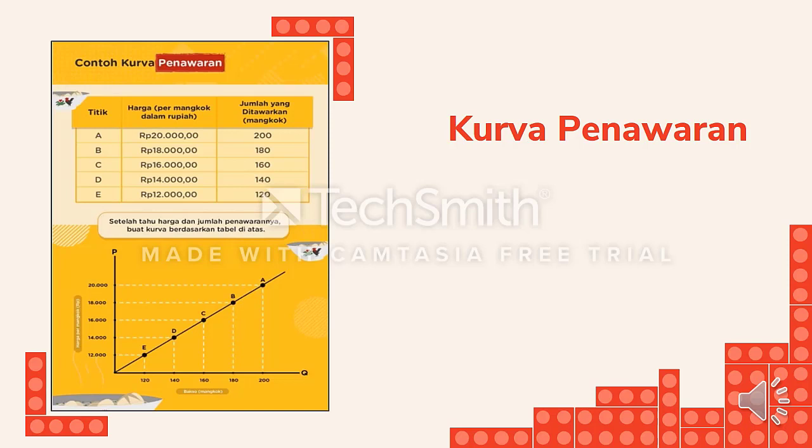Bagaimana hubungan antara harga dengan jumlah barang yang ditawarkan? Hubungan antara harga dengan penawaran dapat dilihat dari bunyi hukum penawaran, yaitu: jika harga barang yang ditawarkan naik maka jumlah barang yang ditawarkan pun akan bertambah. Dan sebaliknya, jika harga barang turun maka jumlah barang yang ditawarkan akan berkurang. Antara harga dengan penawaran terdapat suatu hubungan lurus, di mana harga berbanding lurus dengan penawaran.